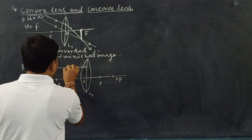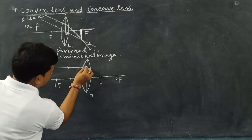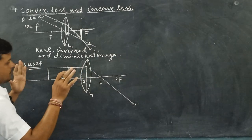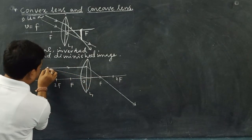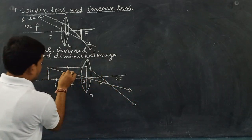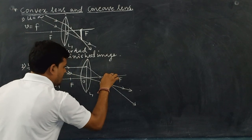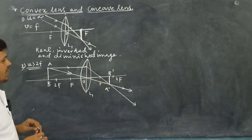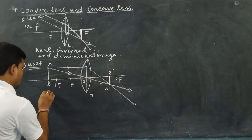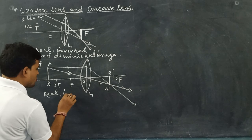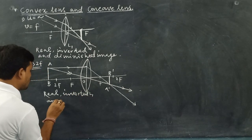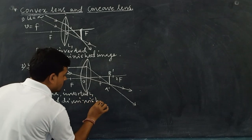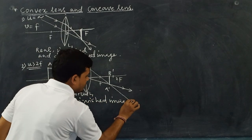A light ray parallel to the principal axis, after refraction through the lens, passes through the principal focus. Another light ray through the optical center remains undeviated. They cut each other at a point — A prime B prime is the image, found by actual intersection of light rays. So this is real and inverted, and since A prime B prime is less than AB, a diminished image is formed.